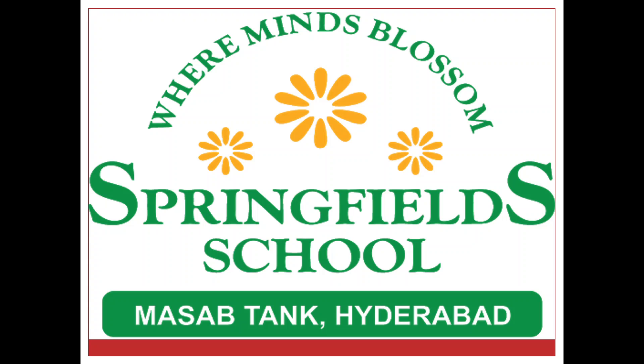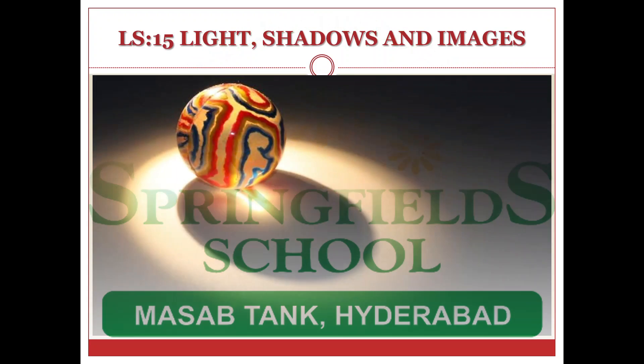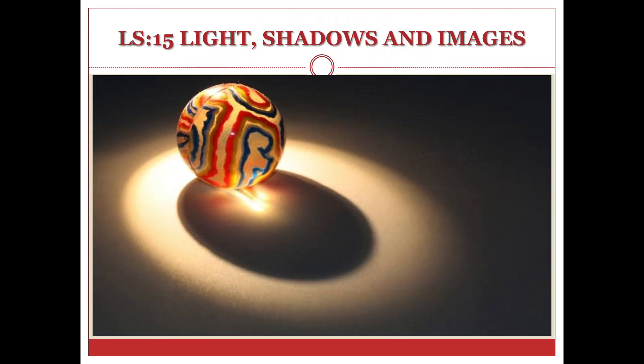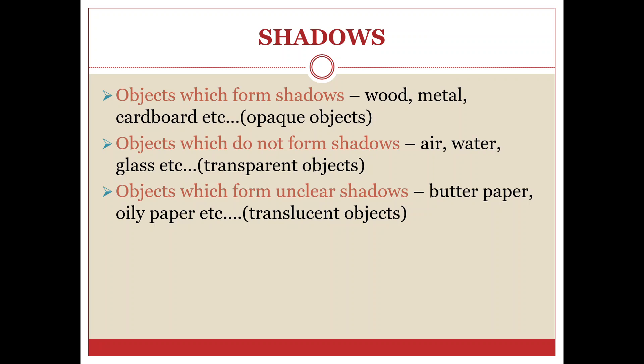Good morning, children. Let's continue with the lesson Light, Shadows and Images. So till now we have learned that there are three types of objects: opaque, transparent, and translucent objects. Objects which form shadows, like wood, metal, cardboard etc., are opaque objects.